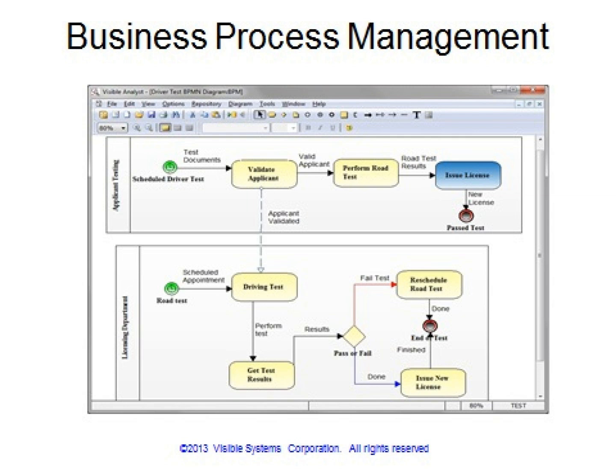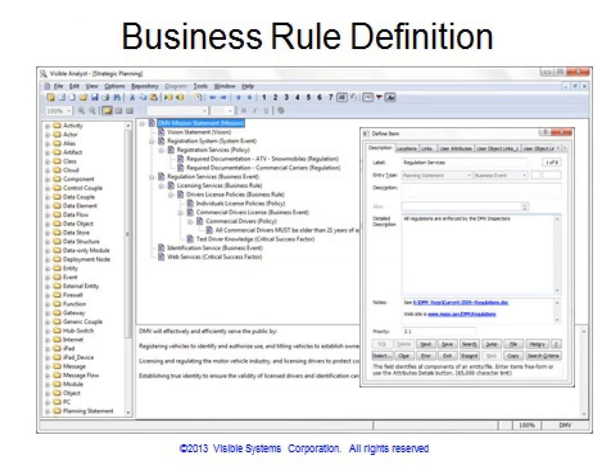The BPMN model support was developed from the OMG BPMN specification. All model items are maintained in the repository and can be reused and integrated within the other model types when appropriate. The Visible Analyst allows you to develop a comprehensive strategic business plan that meets the identified mission and purpose of the organization, and allows you to link them to other objects in your repository.